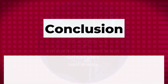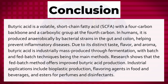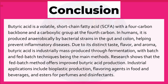Conclusion: butyric acid is a volatile short-chain fatty acid with a 4-carbon backbone and a carboxylic group at the 4th carbon. In humans, it is produced anaerobically by bacterial strains in the gut and colon, helping prevent inflammatory diseases. Due to its distinct taste, flavor, and aroma, butyric acid is industrially mass-produced through fermentation, with batch and fed-batch techniques being the main methods — research shows the fed-batch method offers improved production. Industrial applications include bioplastic production, flavoring agents in food and beverages, and esters for perfumes and disinfectants.